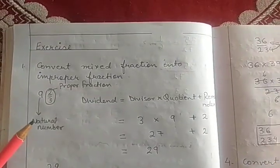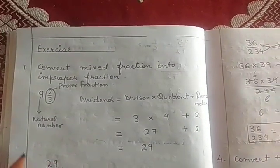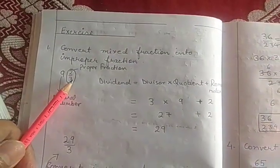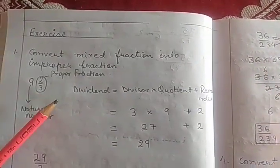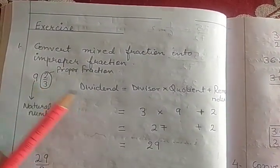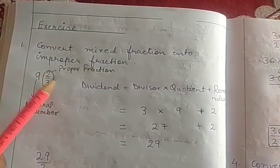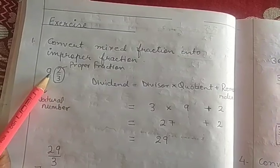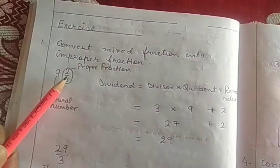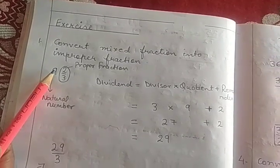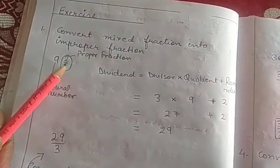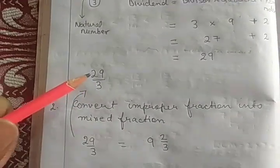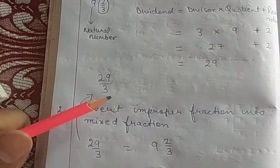Exercise: Convert mixed fraction into improper fraction. For example, 9 and 2/3: this is the dividend, the denominator is the divisor, the middle part is the quotient, and this part is the remainder. So 3 into 9 = 27 plus 2 = 29. So 29 upon 3 is the improper fraction, where numerator is bigger than denominator.